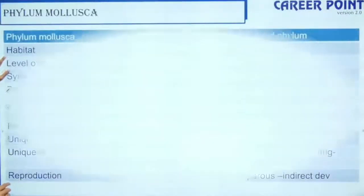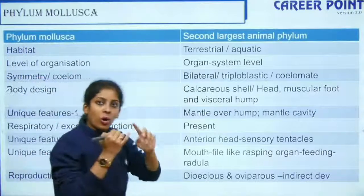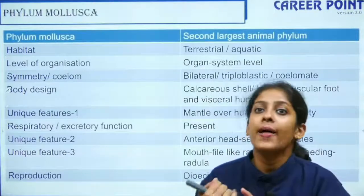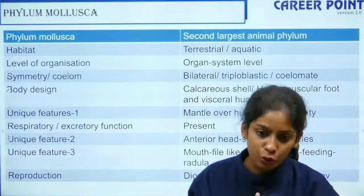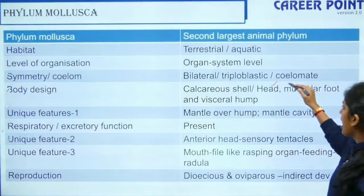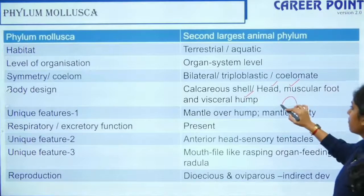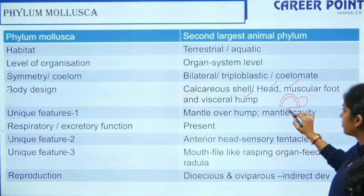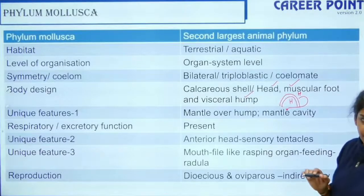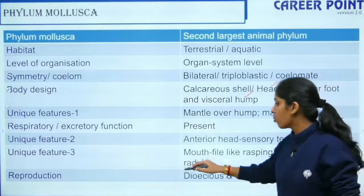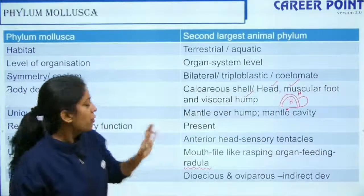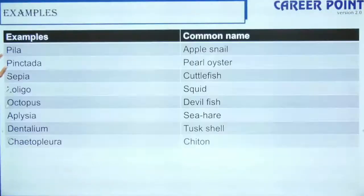The next phylum is Mollusca — the second largest phylum. Organ system level, triploblastic, bilateral symmetry, coelomate, and no notochord. They have a calcareous shell. The body is divided into head, foot, and a hump. Over the hump is a layer called the mantle, and the space between the hump and the mantle is the mantle cavity. An important term in Mollusca is radula — it is a rasping mouth-like organ.